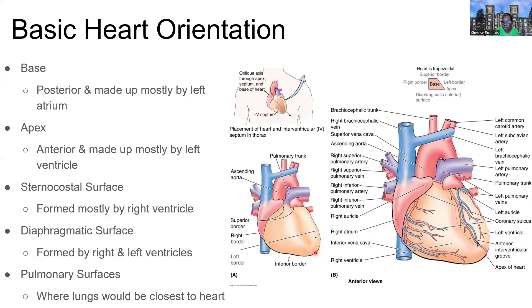The sternocostal surface is mainly the right ventricle, sitting right behind the sternum — this is your most anterior-facing surface. The diaphragmatic surface is the inferior border that actually sits on the diaphragm, shared partially by the left ventricle and partially by the right ventricle. The base — the top back — should not be confused with the diaphragmatic surface at the bottom. Lastly, the pulmonary surfaces are the lateral borders where the lungs come into close contact with the heart, separated by the parietal pleura of the lungs and the pericardium of the heart.